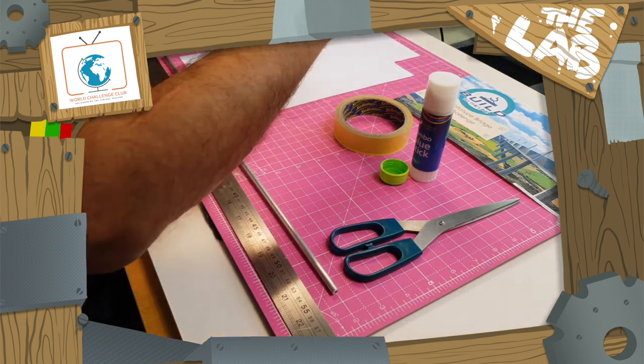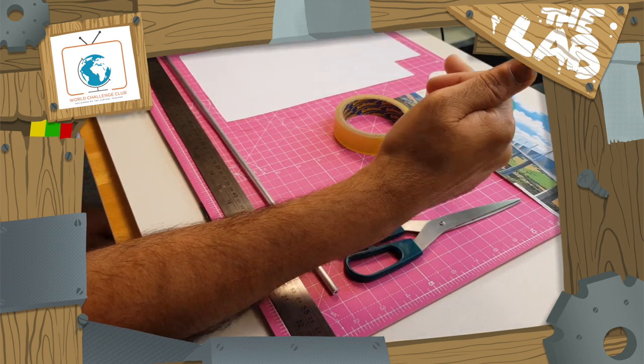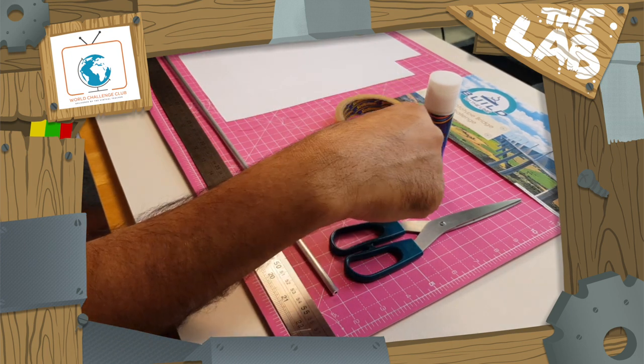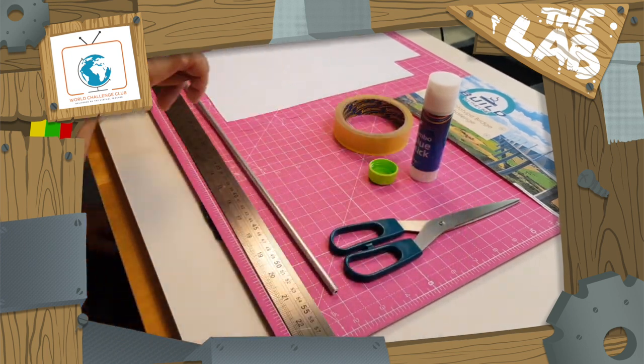Two sheets of paper, glue stick or clear tape, a bottle cap to measure the weight, a pair of scissors, a ruler.